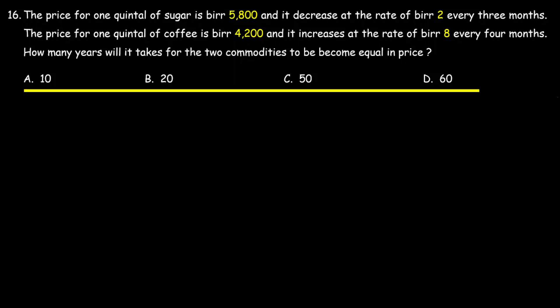The price for one quintal of sugar is BRR 5800 and it decreases at the rate of BRR 2 every 3 months. The price for one quintal of coffee is BRR 4200 and it increases at the rate of BRR 8 every 4 months. How many years will it take for the two commodities to become equal in price?